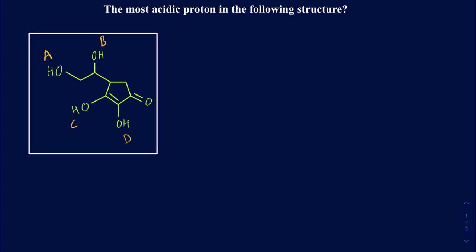You can follow the ARIO framework: the atom effect, the resonance, inductive, and orbital effects, and then you can also have the solvation effect at the very end. The very first thing you want to do in order to determine the most acidic proton is to draw the conjugate base of every single proton after losing every single proton.